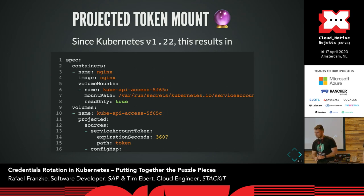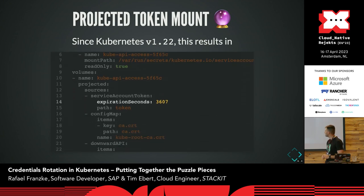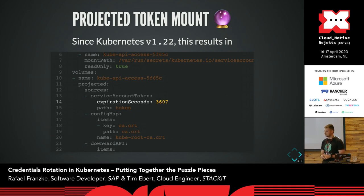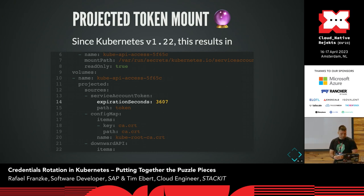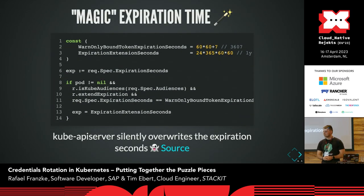Going back to the presentation — this is the same slide as before, and I want to point out the default expiration seconds that Kubernetes uses when you deploy a pod without further configuration. It says something like an hour and seven seconds. That seems reasonable — an hour is not too long, not too short. But that number looks a bit suspicious: 3,607. Why is it such a strange number?